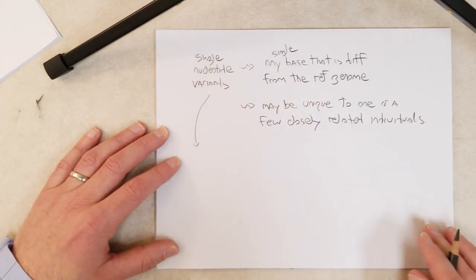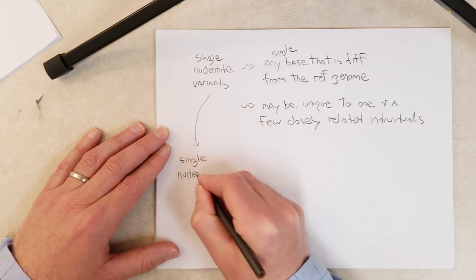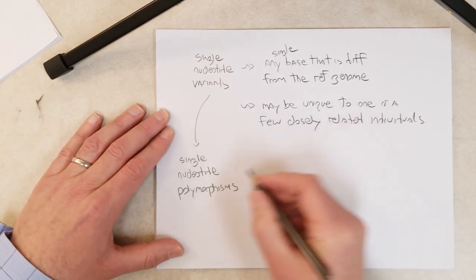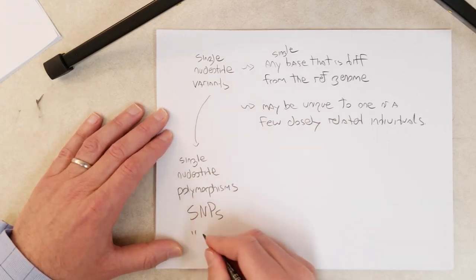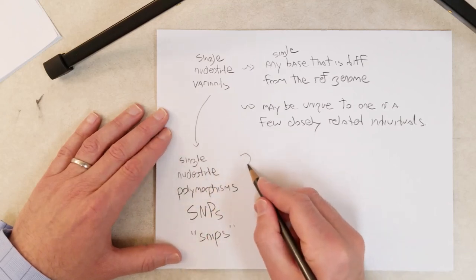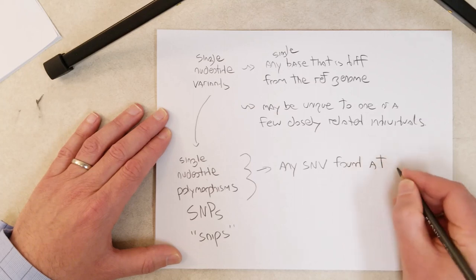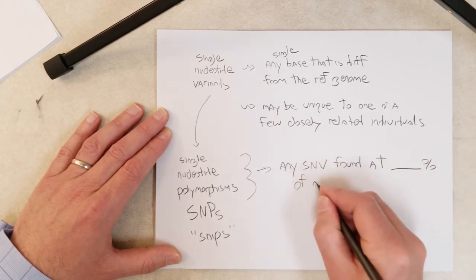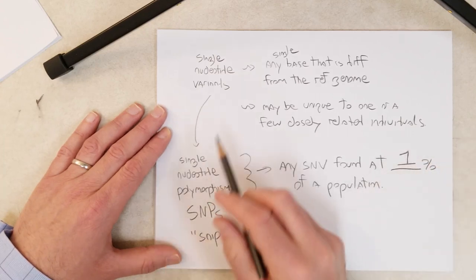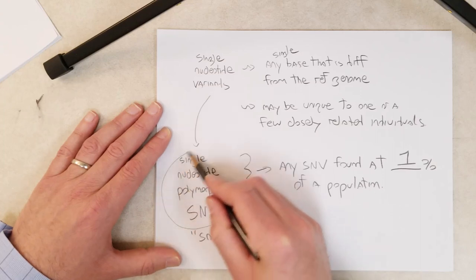Scientists are very interested in a category of SNVs called single nucleotide polymorphisms, or SNPs — also simply called snips. A single nucleotide polymorphism is any SNV found at a certain percentage of a population. Typically we consider this threshold to be one percent — if an SNV is found in one or more percent of the population, it's considered an SNP.